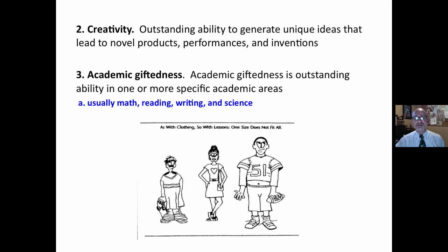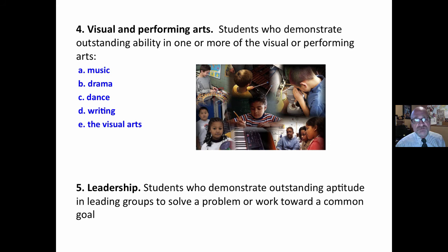Academic giftedness — the area we're focusing on here — is outstanding ability in one or more specific academic areas, and we're looking at reading. The arts is an area I love and that is underserved: outstanding ability in music, drama, dance, writing, and the visual arts. Leadership refers to students who demonstrate outstanding aptitude in leading groups to solve a problem or work toward a common goal. Generally, this is not formally identified in the elementary grades, if at all.